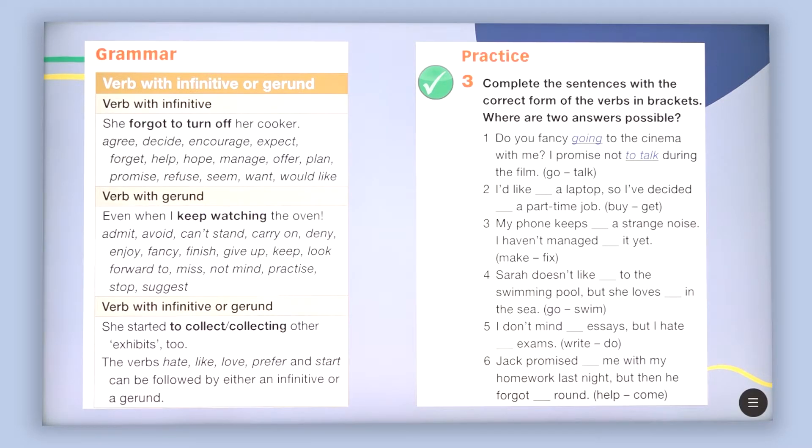Then you are going to have the gerund in which you are going to have the ing form. For example, even when I keep watching the oven. It means admit, avoid, can't stand, carry on, deny, enjoy and so on are used with the gerund.